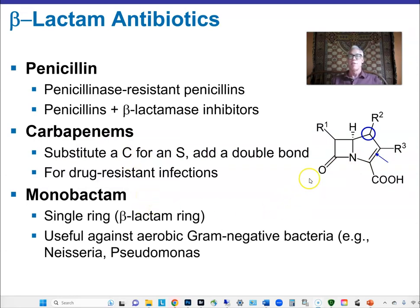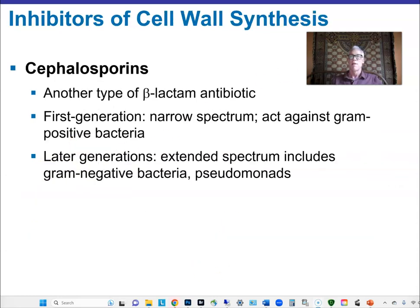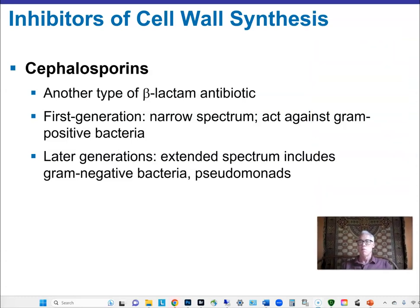Monobactams have a single beta-lactam ring with no side ring — another type useful against gram-negative bacteria, including Pseudomonas, which is a major nosocomial problem that can survive on almost anything.